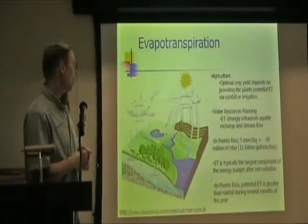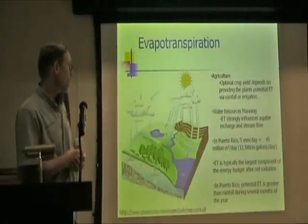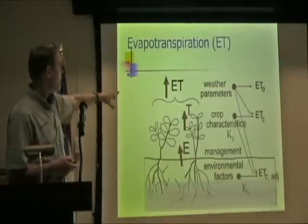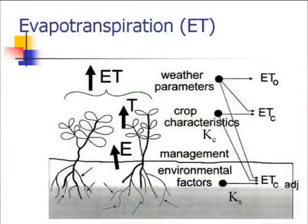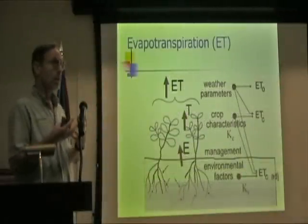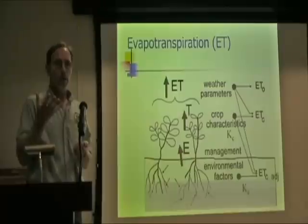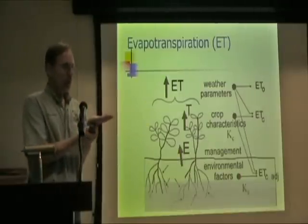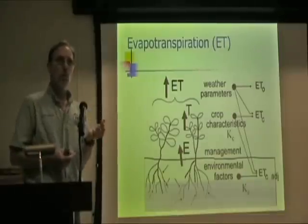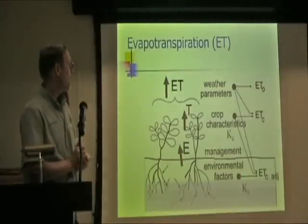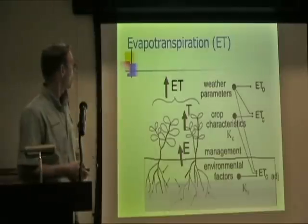In Puerto Rico, potential evapotranspiration is greater than rainfall during several months of the year, especially in areas like Ponce. Evapotranspiration is the combination of transpiration from plant leaves and evaporation of water from surfaces such as wet leaves, lakes, or soil. Transpiration is the process of converting liquid water within the plant leaf into vapor, which is released to the atmosphere via stomata — microscopic holes typically found on the bottom of the leaf.